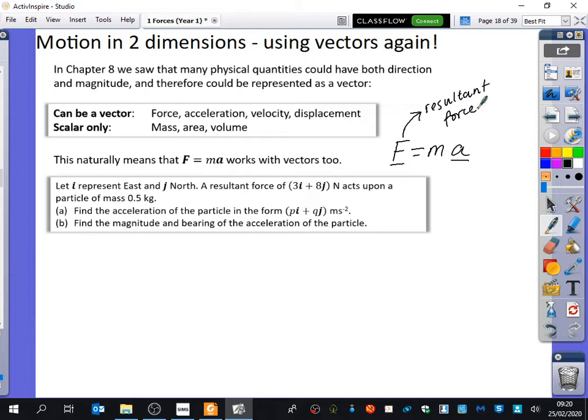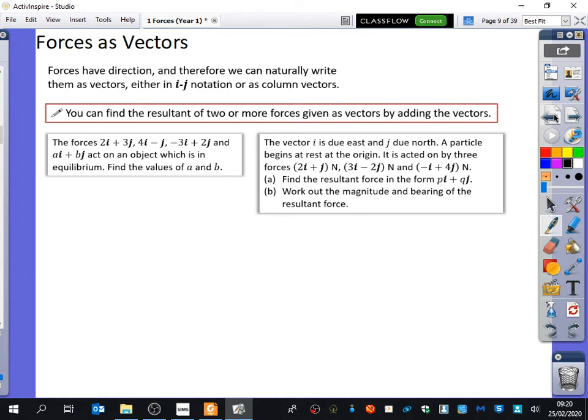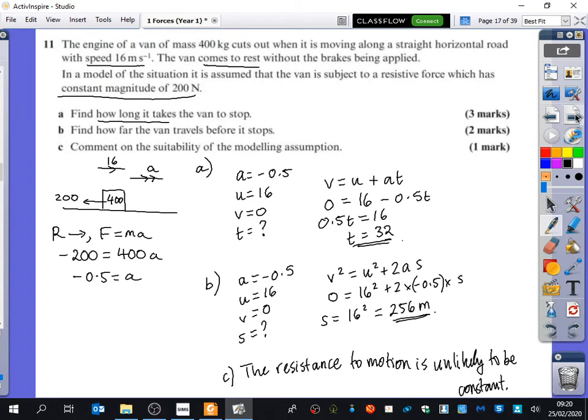What do you do with vector forces to find their resultant force, their overall force? Amina, you got it? No, no. Not if they're written as column vectors already. You just add them together. You should remember that from these previous slides that we've got somewhere about here. You can find the resultant of two or more forces given as vectors by adding the vectors. So we're just going to be reminding ourselves of these things because they all build on top of each other.